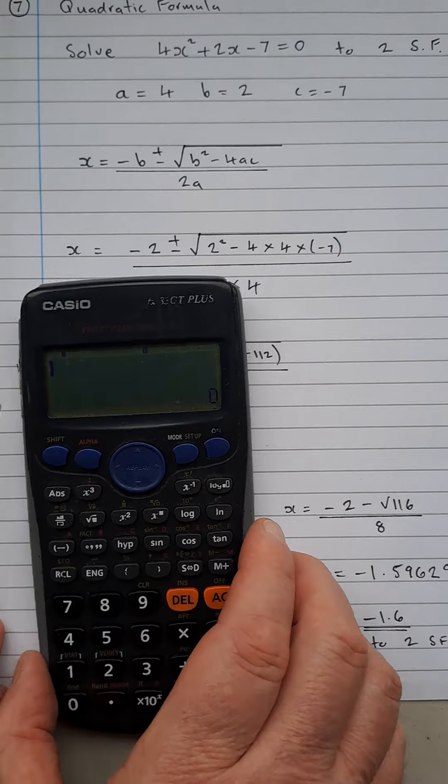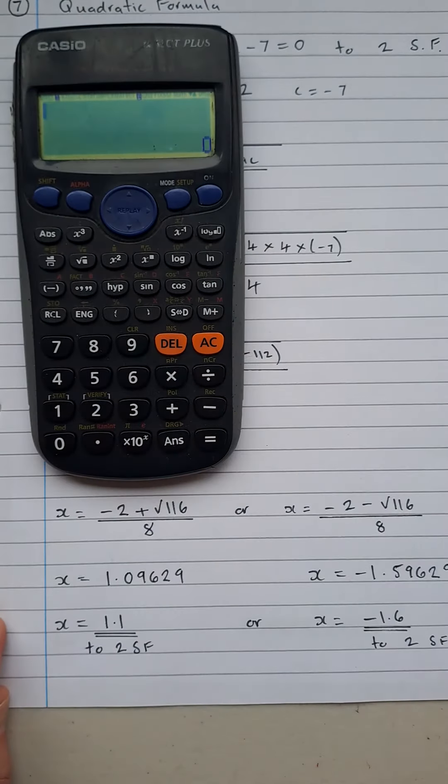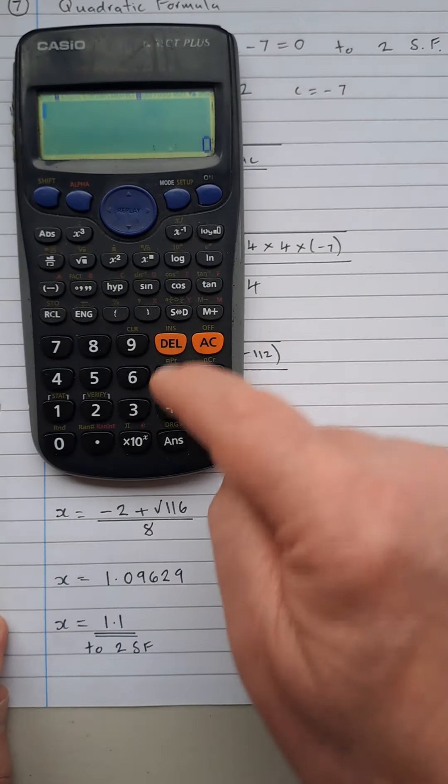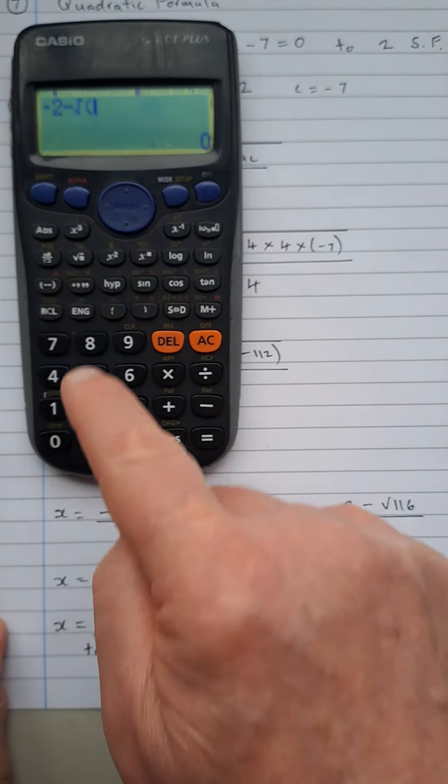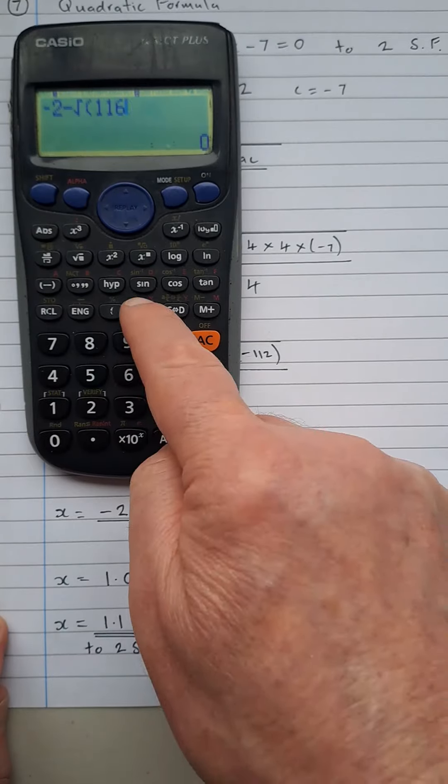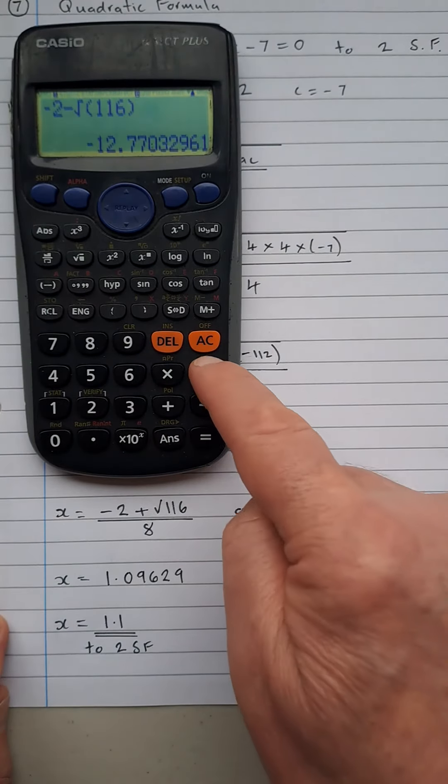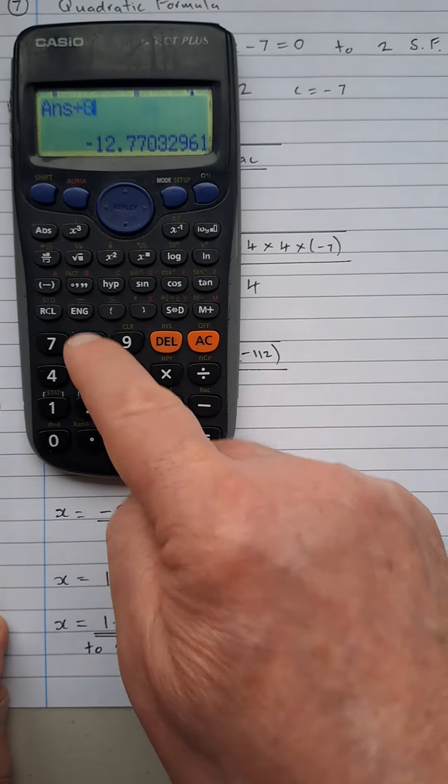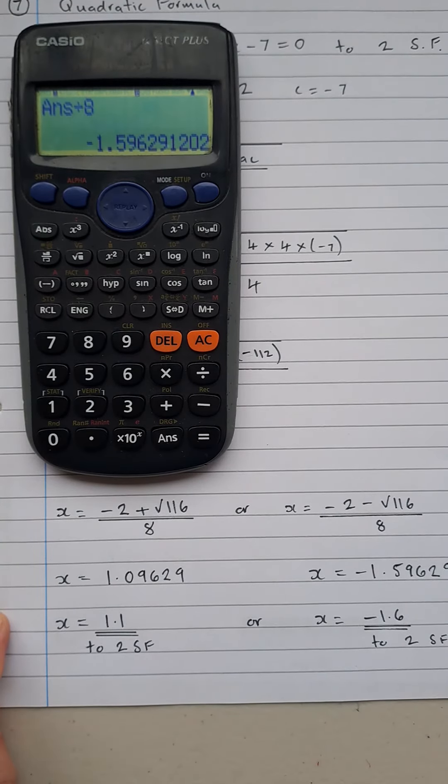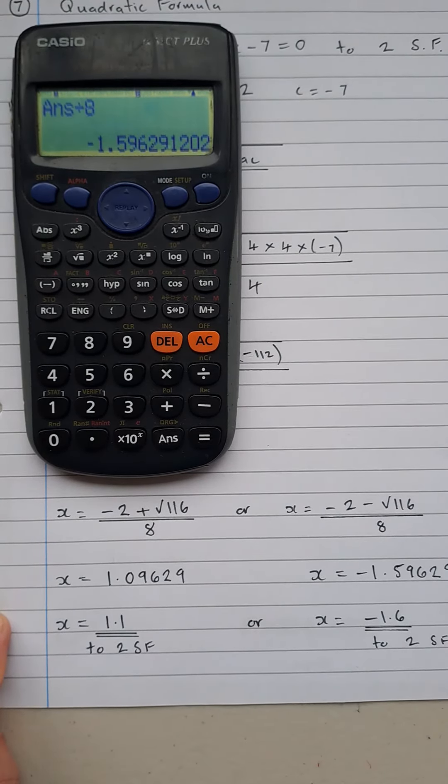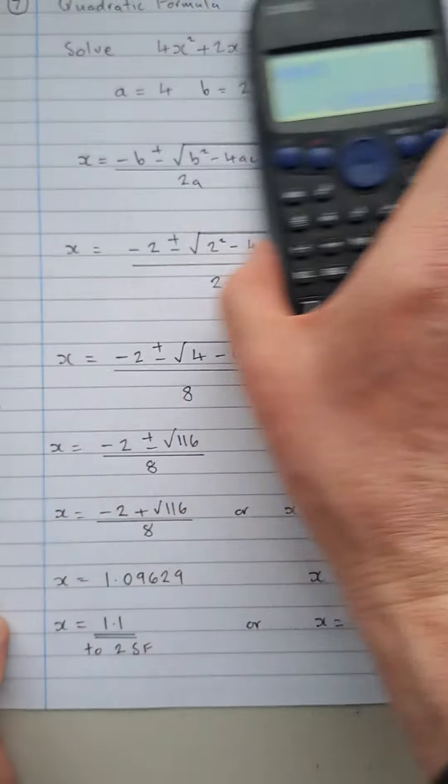we have minus 2, take away root 116 equals, divide your answer by 8 and we have the minus 1.59629 that you can hopefully see there. So these are